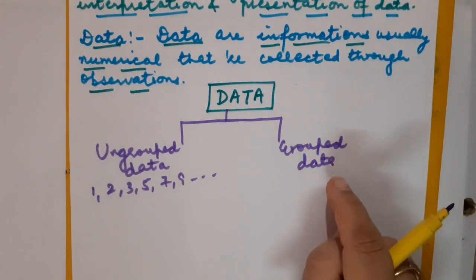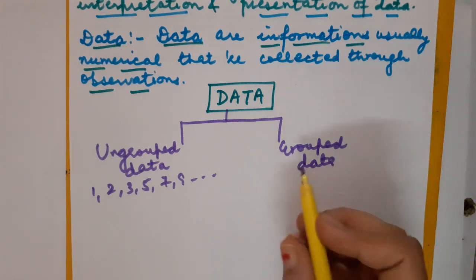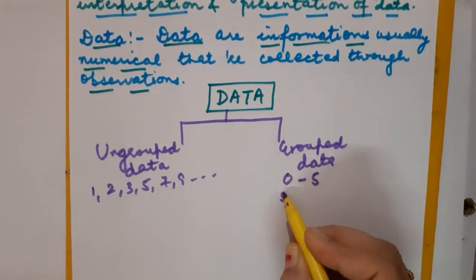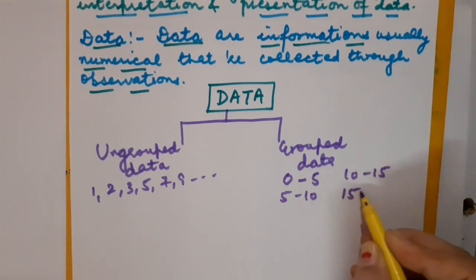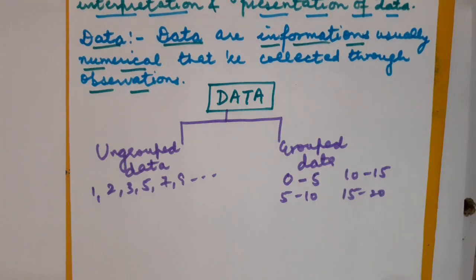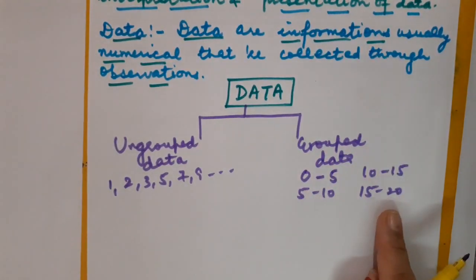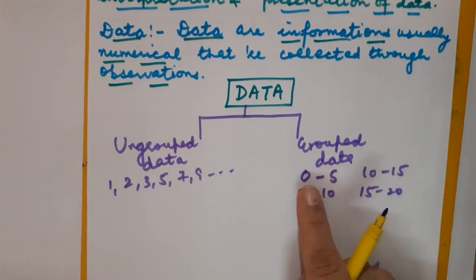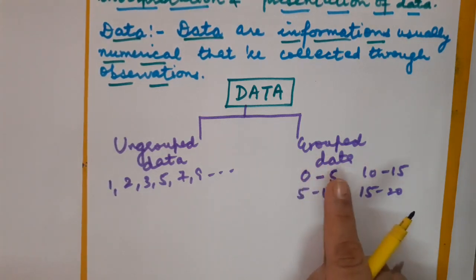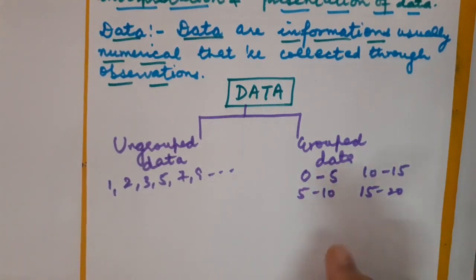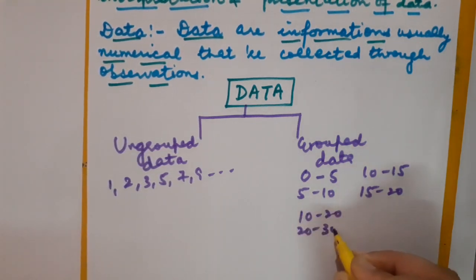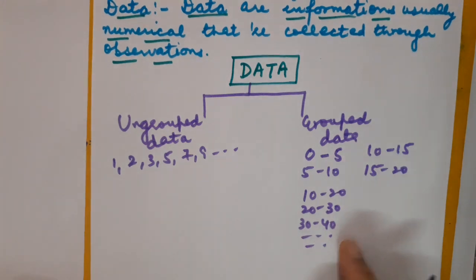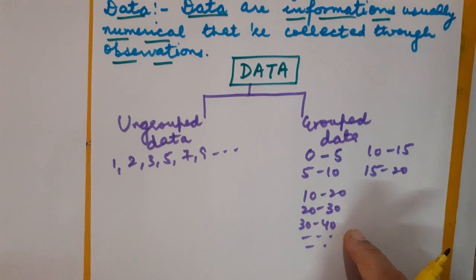Grouped data is data that has been organized into several groups. For example: 0 to 5, 5 to 10, 10 to 15, 15 to 20, and so on. The difference between the two numbers in each group is known as the class interval. It is not essential that the gap always be 5 — it could also be 10 to 20, 20 to 30, 30 to 40, and so on. This is also known as grouped data, and each range like 10 to 20 is called a class interval.